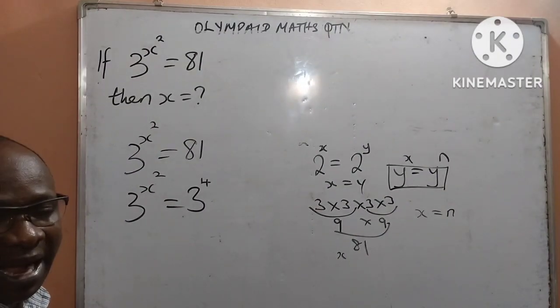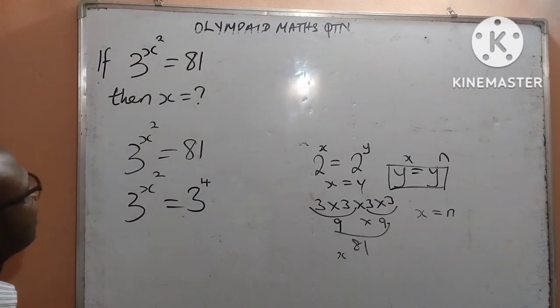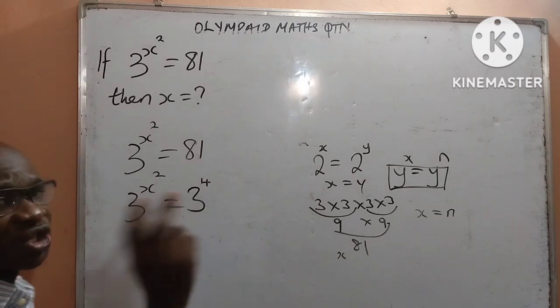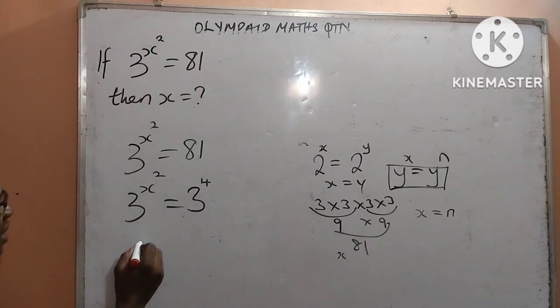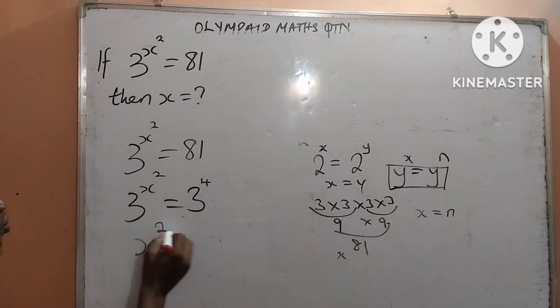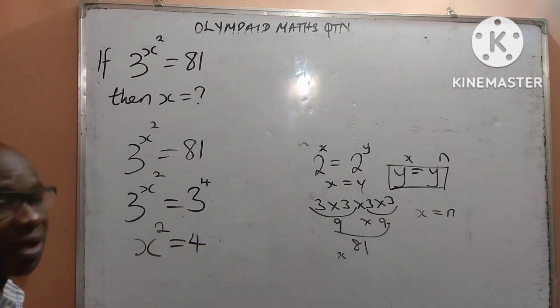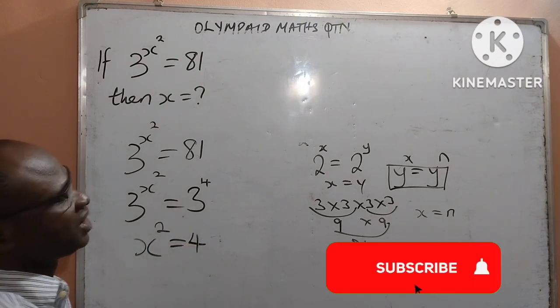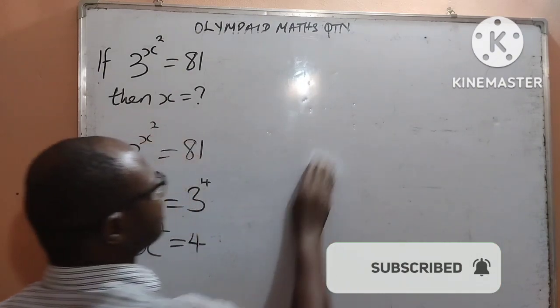So going by that, I will now have that here is base 3, by the right is also base 3. Automatically, the power which is x to the power of 2 will now be equal to 4. That is what I will have since the bases are equal, going by the law of indices.